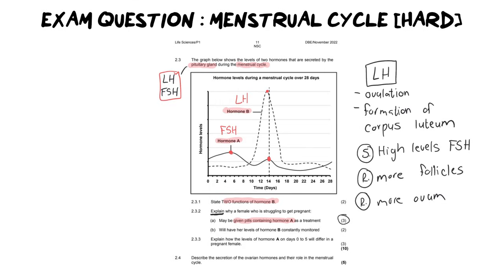The second one says, explain why a female who is struggling to get pregnant will have her levels of hormone B constantly monitored. Well, if B is luteinizing hormone, it is the hormone that is creating ovulation. Again, let's look at the mark allocation. We've got two marks, so we need a statement and a reason. Why would we want to record her LH level? Well, we want to record her LH level because if the LH level is high, it means that she has ovulated, which means she has the opportunity to become pregnant. You want to know when you've ovulated if you want to fall pregnant.